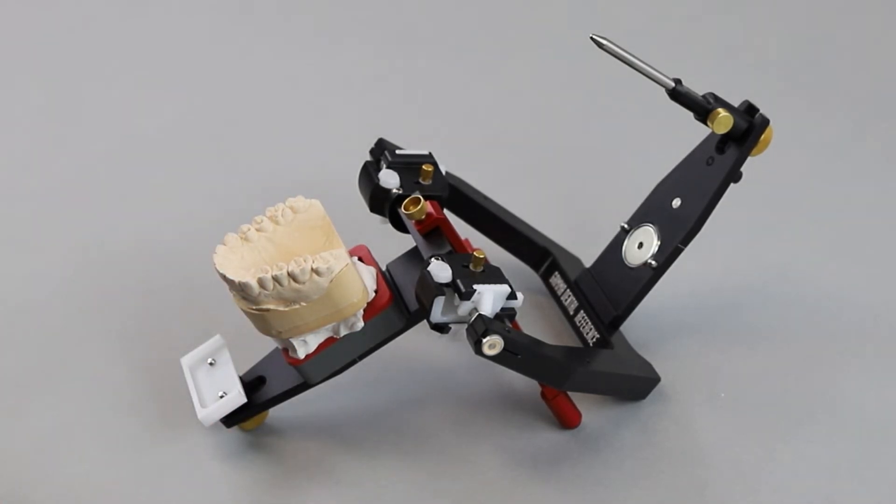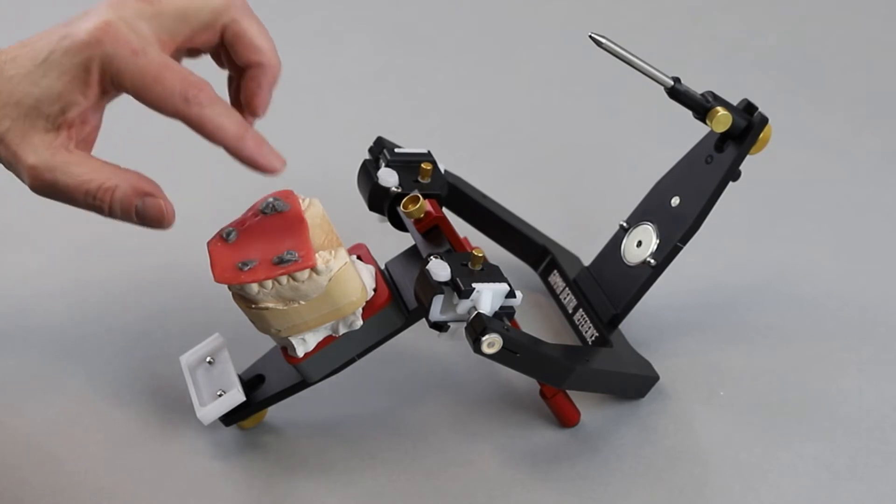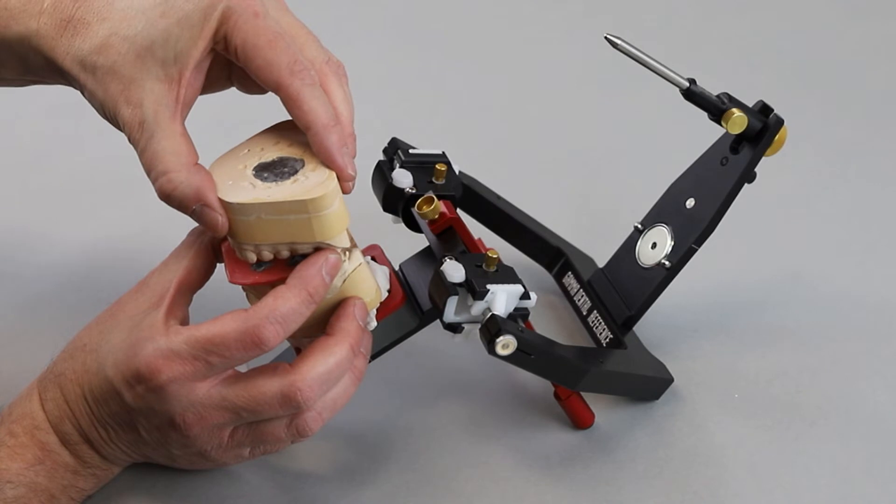Then carefully place the bite registration on the upper jaw model. Insert the lower jaw model on the registration imprints.